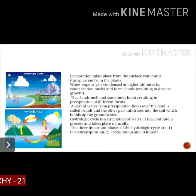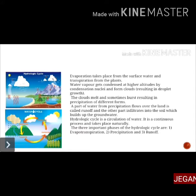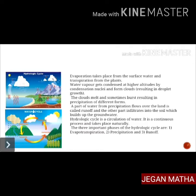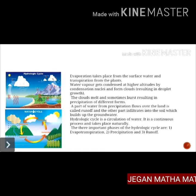Evaporation takes place from surface water and transpiration from plants. Water vapor gets condensed at higher altitudes by condensation nuclei and forms clouds. The clouds melt and sometimes burst, resulting in precipitation of different forms. A part of water from precipitation flows over the land, called runoff, and the other part infiltrates the soil, which builds up the groundwater.